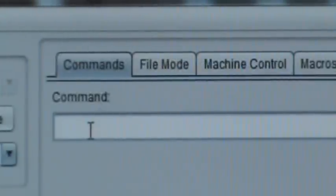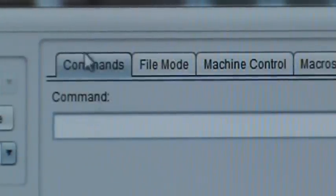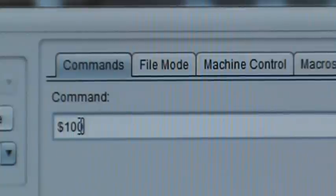Okay, back to Universal G-code sender. We clicked on the commands tab. Then we're going to enter the new command to reset our steps per millimeter for the x-axis. So to do that, you're going to type in dollar sign 100 equals 40.052. And that's what we got from the spreadsheet. We're going to hit enter.